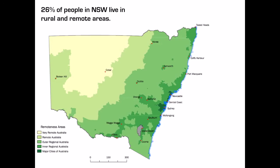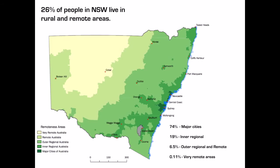26% of people in New South Wales live in rural and remote areas, with a breakdown quite similar to the national statistics. Some areas are considered very remote, such as Cobar; remote, such as Broken Hill; outer regional, places like Dubbo and Moree; inner regional, Wagga Wagga, Orange, Bathurst and Goulburn; and major cities, obviously Sydney, Newcastle and Wollongong.